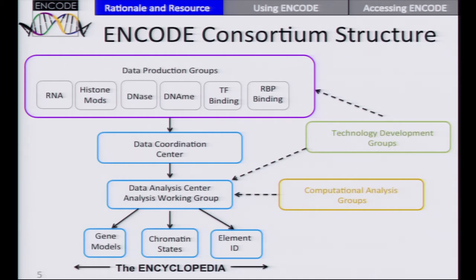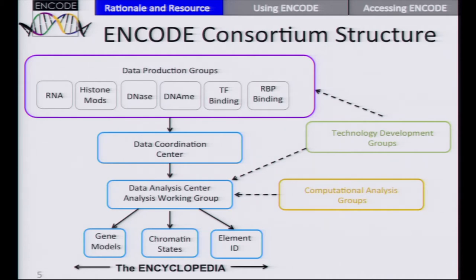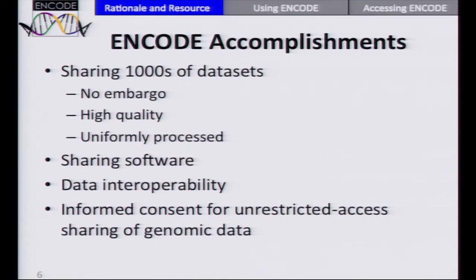The ENCODE consortium is one group working on this. In purple on our diagram, there are data production groups focused on different data types. There's a data coordination center that accessions, collects, and shares the data. There's a data analysis center and analysis working group taking the lead on low-level analysis and uniform processing of data. We also have computational analysis groups and technology development groups. Together, the output is an encyclopedia: gene models, chromatin states, LMN IDs, and regulatory regions.